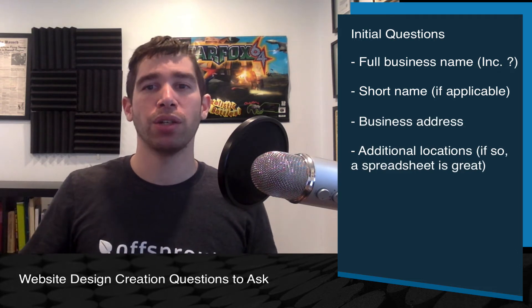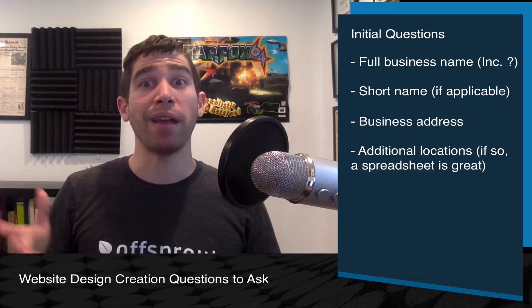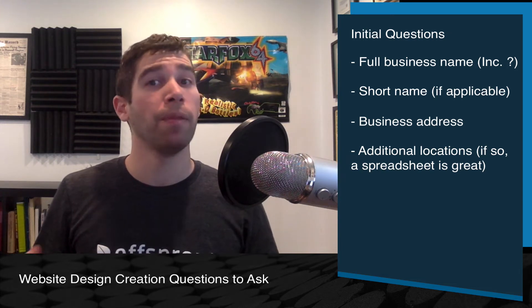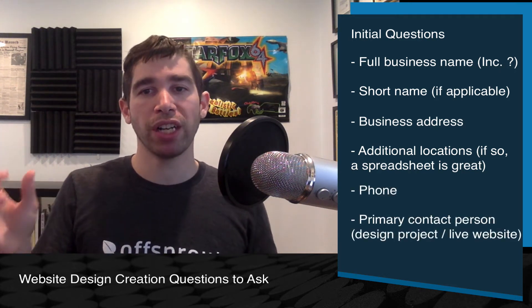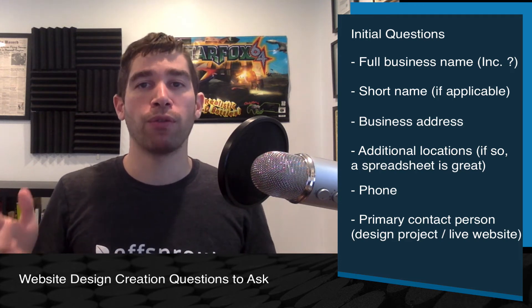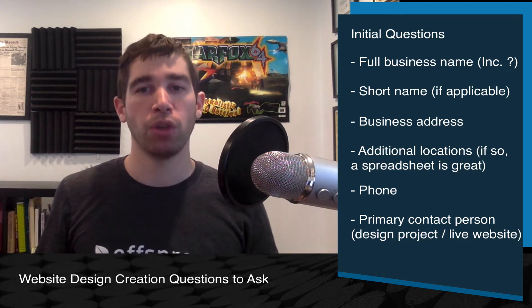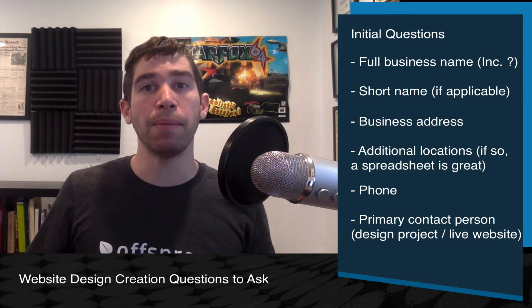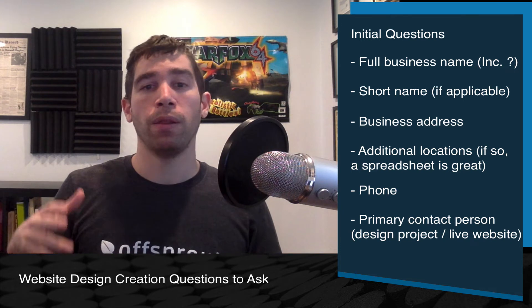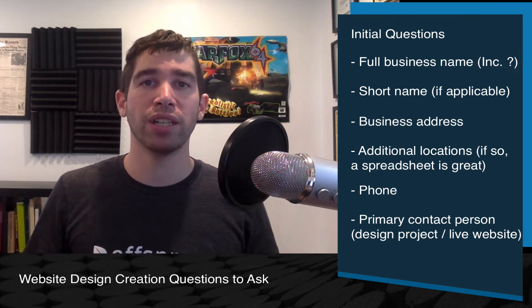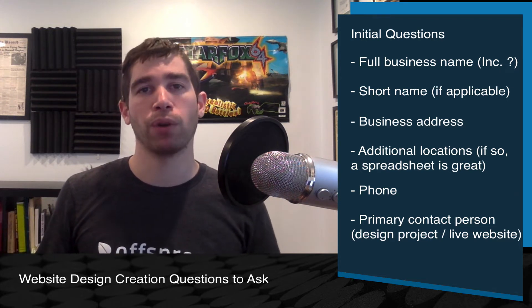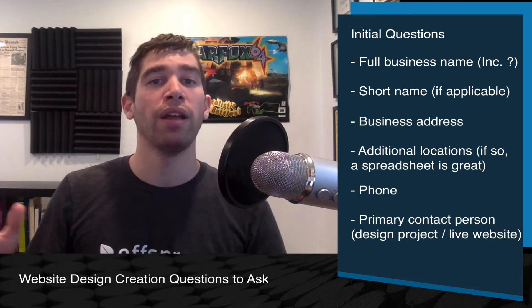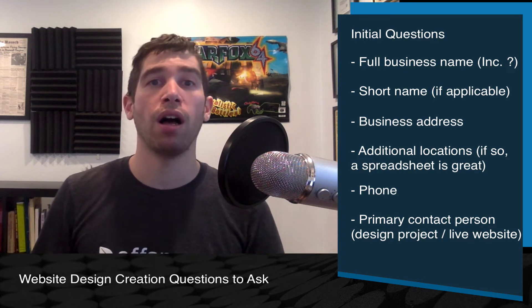What is your main business address? If you have additional locations, please list them so we can include them. If you have many locations, a spreadsheet with all your location data would be great. What's your primary phone number? Who is the primary contact person for the website design project — with their name, email, and phone — as well as the primary contact for the live website? These may be different. One person may be the webmaster needing access to analytics and contact form submissions, while another is heading up approvals on the client's end. For larger organizations especially, make sure you know who that contact person is.